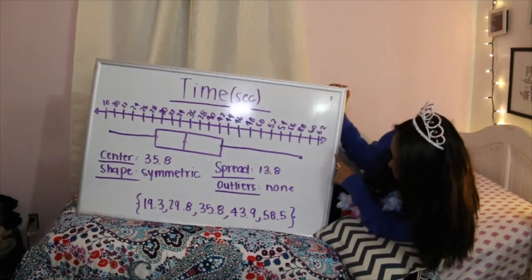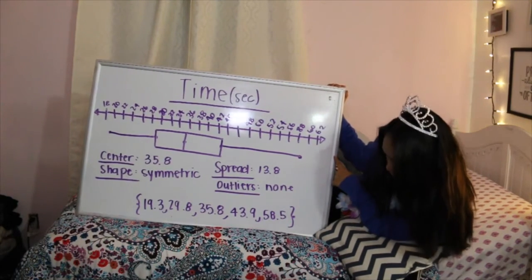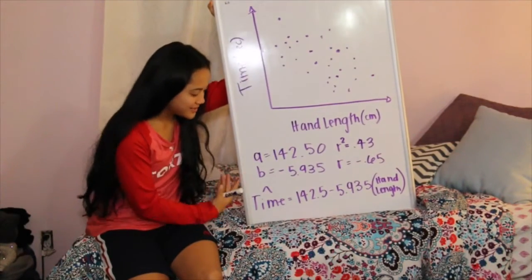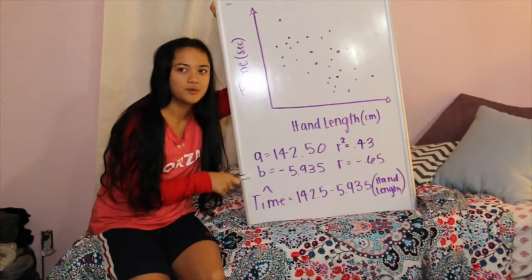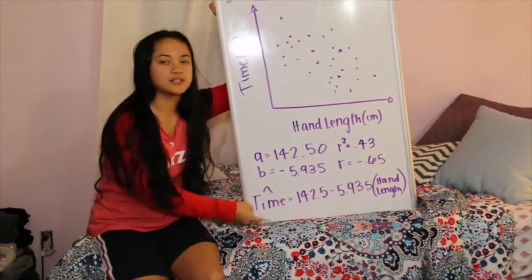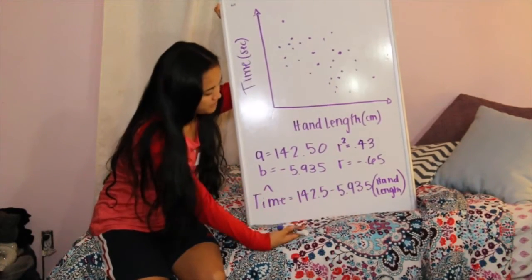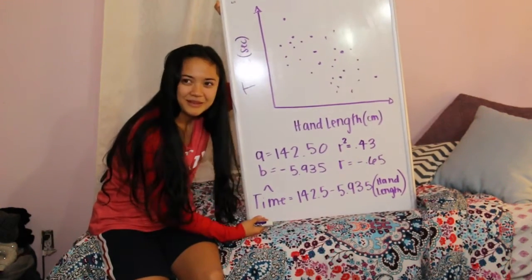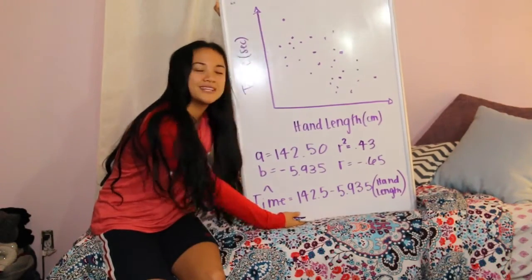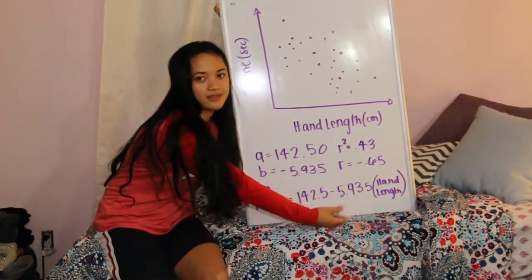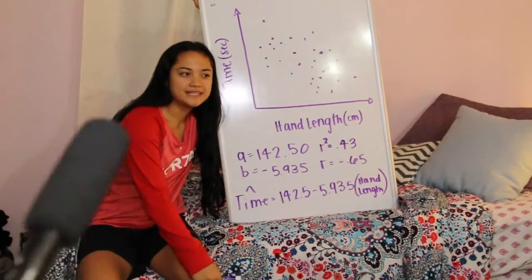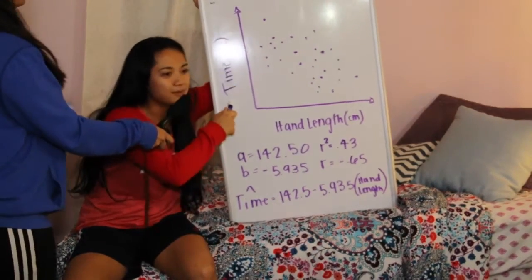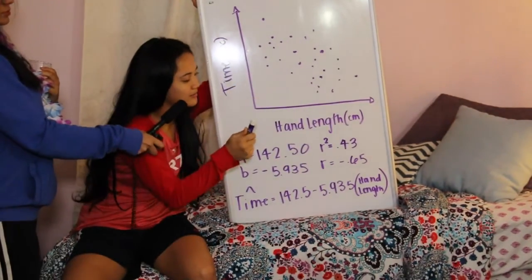The five-number summary is 19.3, 29.8, 35.8, 43.9, and 58.5. Based on our data, our y-intercept is 142.5 and our slope is negative 5.935. Our r-squared is 0.43 and our r is negative 0.65. With this information, we can make our equation: the predicted time equals 142.5 minus 5.935 times the hand length. There is a moderate, linear, and negative association between the time it takes to button and unbutton a t-shirt and how large your hand is.